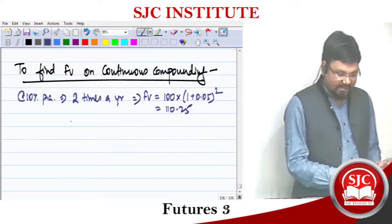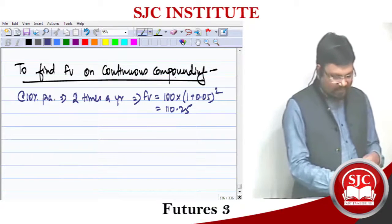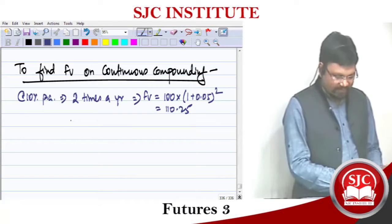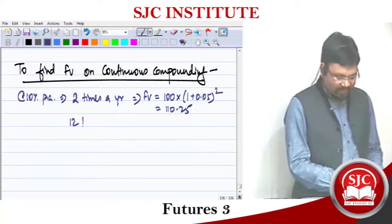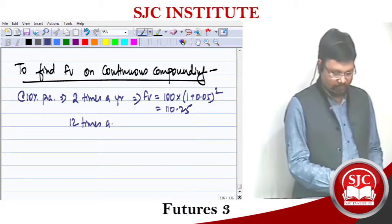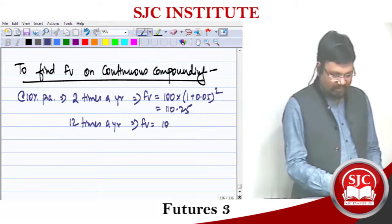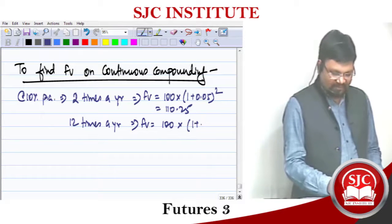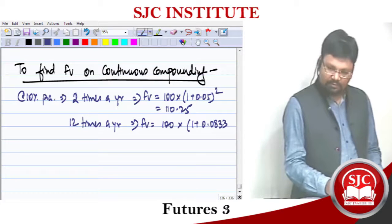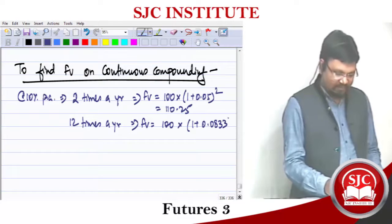Now let's feel continuous compounding. We'll try two times, then 12 times. The future value will be 100 into 1 plus 0.0833 — that is 10% divided by 12 — to the power 12.